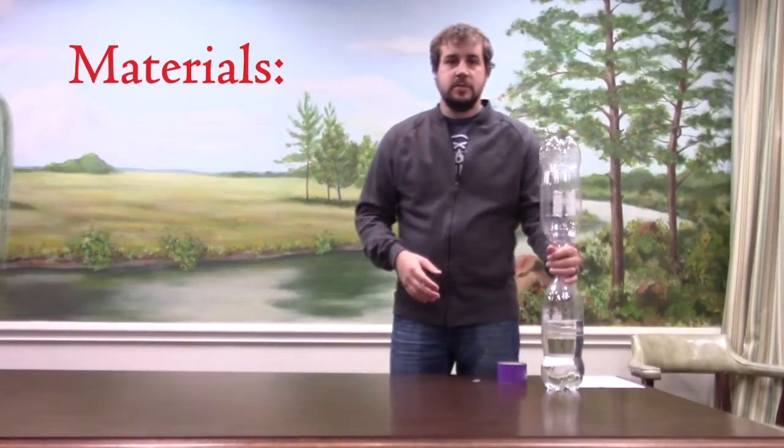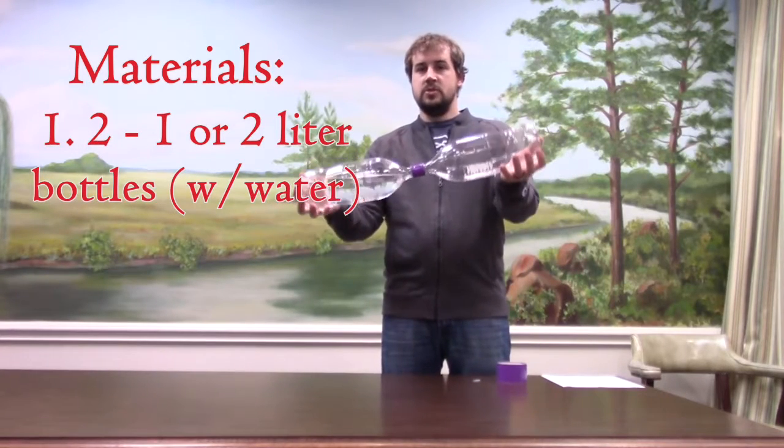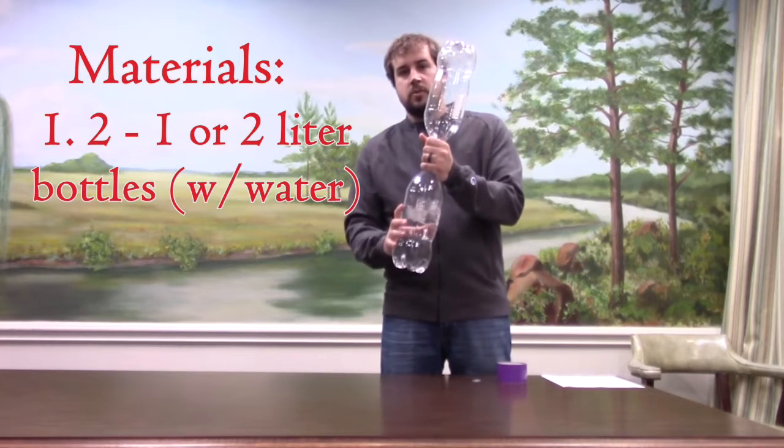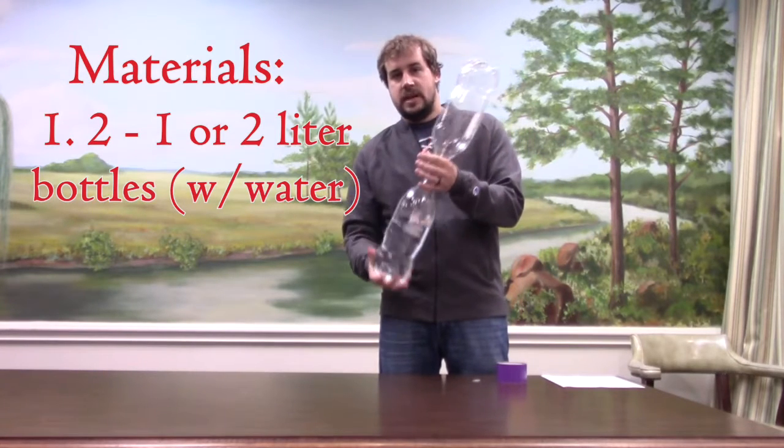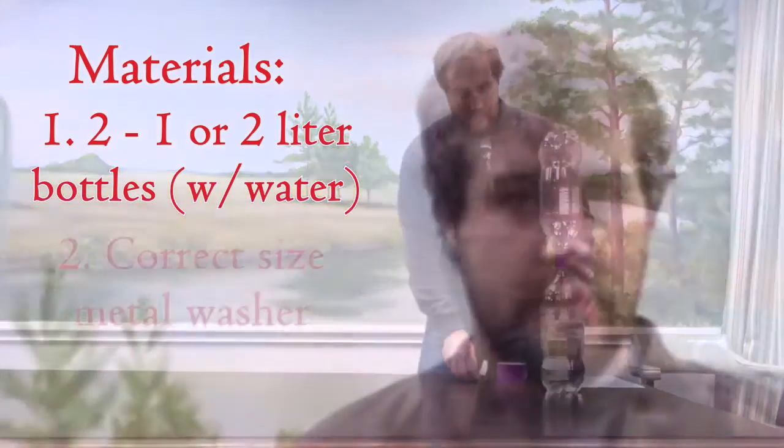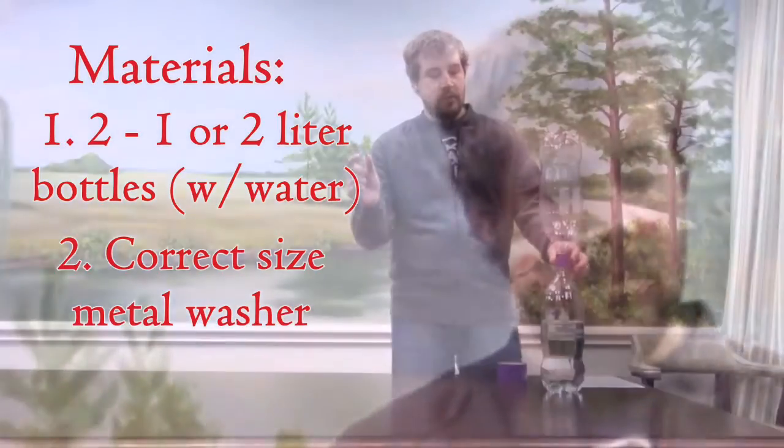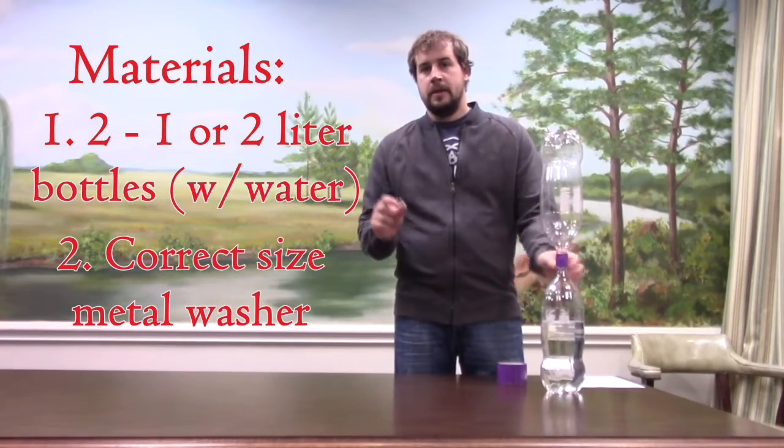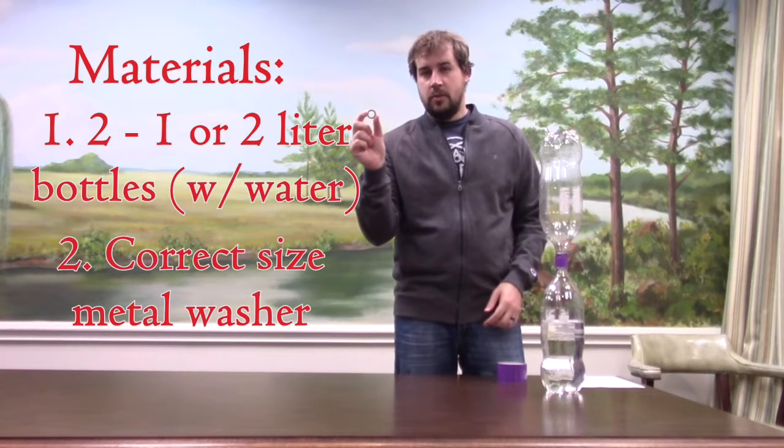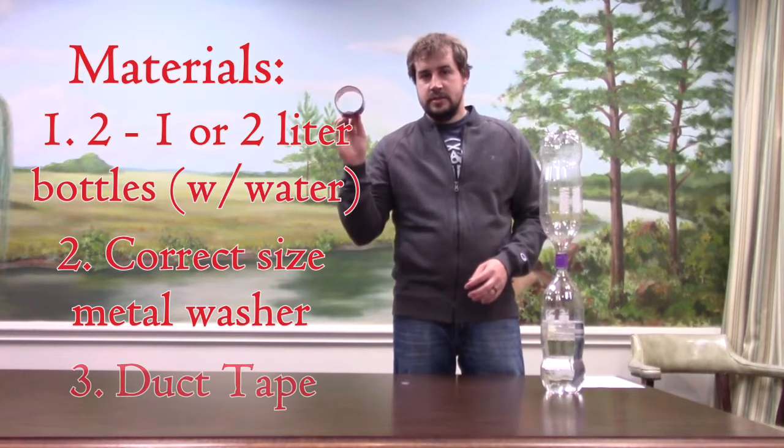What you're going to need this week is two soda bottles. They can be two liter or one liter, but you want to make them big enough that you can get a good amount of water in there so you can really see what's happening. So we need two bottles. You need a metal washer that is roughly the width of the bottle top opening, but that also has a large enough central area to allow water to pass through. And then you just need some duct tape.